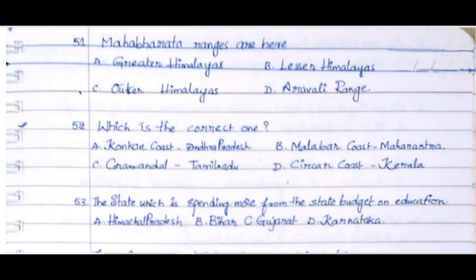Question 51: Mahabharata ranges are in. Option A. Greater Himalayas, Option B. Lesser Himalayas, Option C. Outer Himalayas, Option D. Aravalli Range. The answer is Option B. Lesser Himalayas.